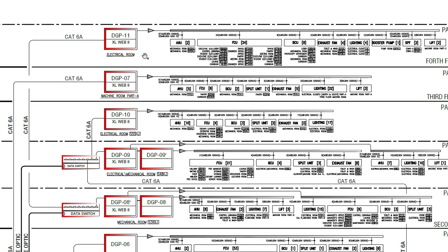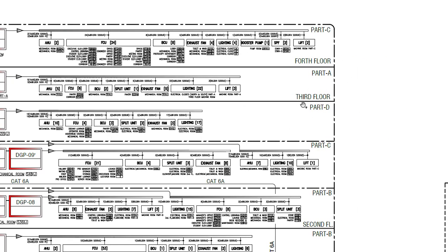So now you have an idea of what information a riser diagram provides — how DGPs are connected with each other, what equipment is connected, and the locations of all DGPs. Once you go through this document you will have the complete picture of your system and how it is installed. For further detail you can refer to the IO lists and schematic diagrams, which were discussed in a previous video. The diagram also covers third floor part A and fourth floor part C.